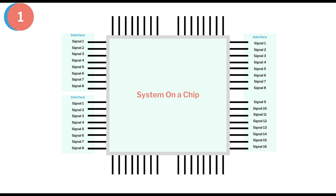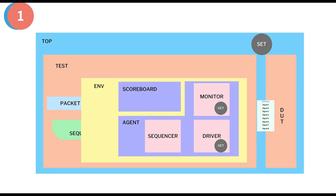With the declaration of an interface it becomes easy for the driver to toggle pin-level information. The driver can do this by accessing the handle for the interface. Because of certain rules in SystemVerilog, the interface should be set in a module so it can be available to other components. We need to use the set method in the top module to set the virtual interface handle, and in the driver and monitor we need to use the get method to get the handle of the virtual interface.